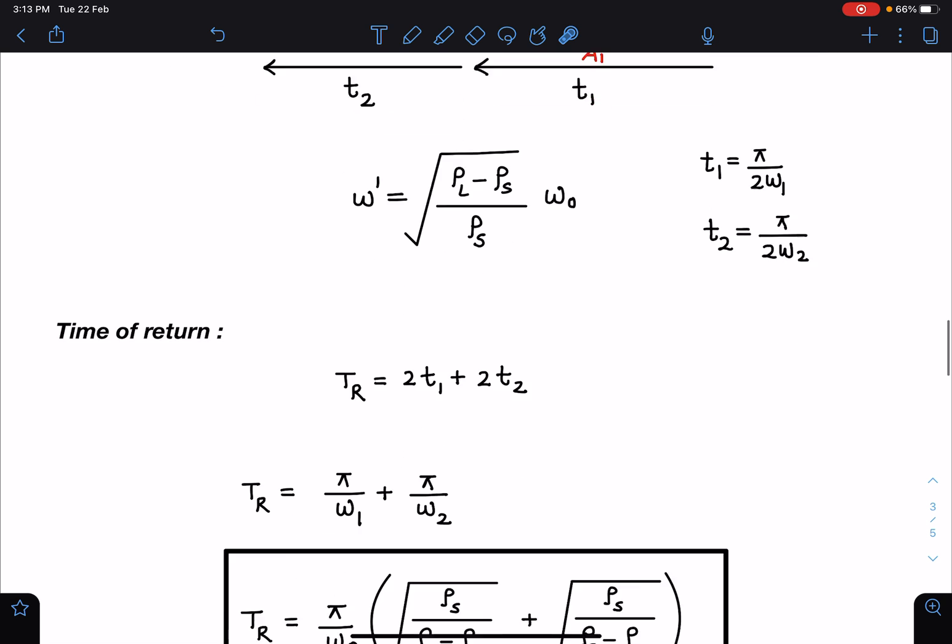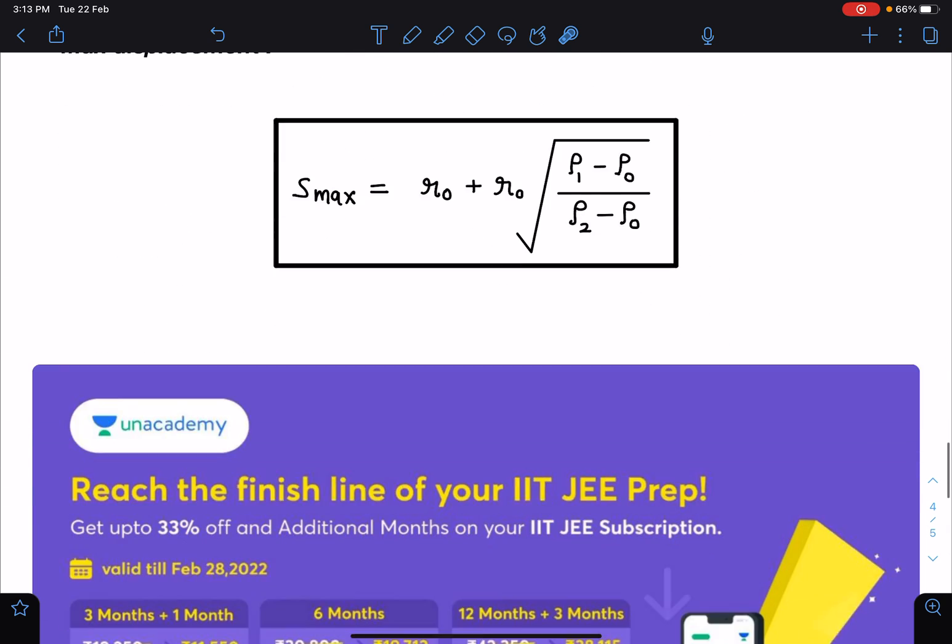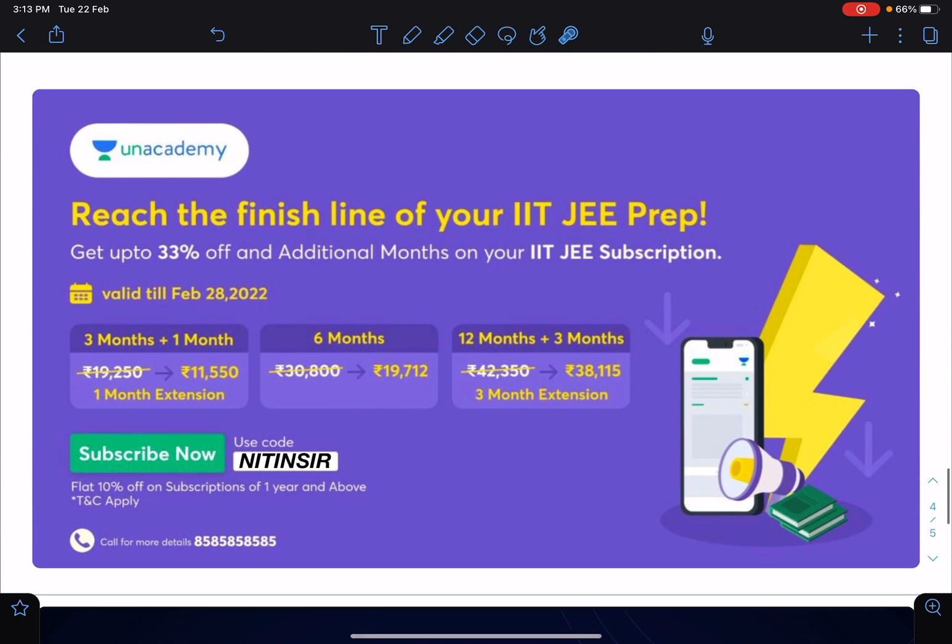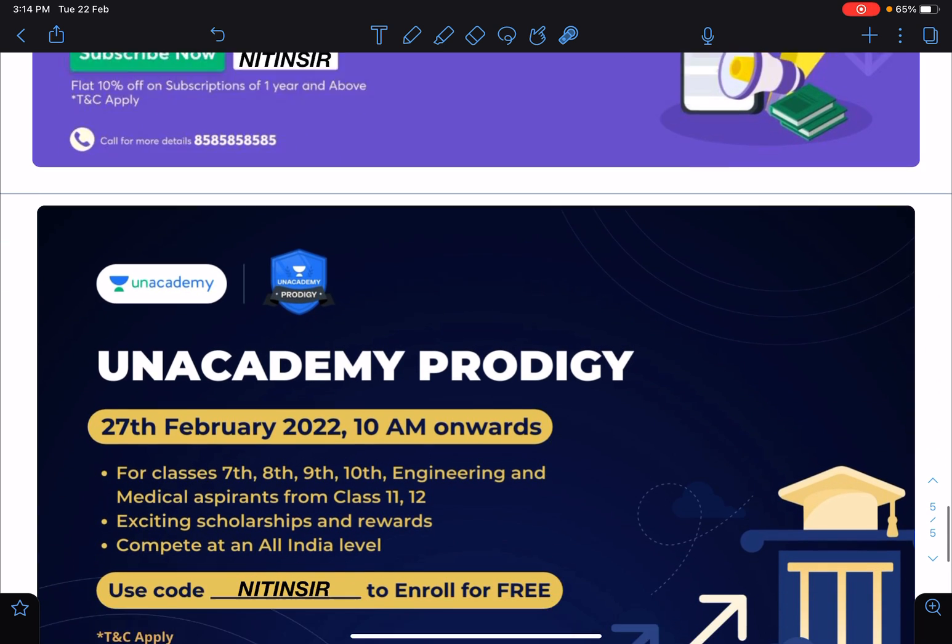That's it guys, I think all answers we have given. So here guys you can get up to 33% off on your subscription at Unacademy. You can have three months plus one month at some price, and similarly in six months also price reduction is there, and 12 months plus three months also some price reduction or extra months are given.